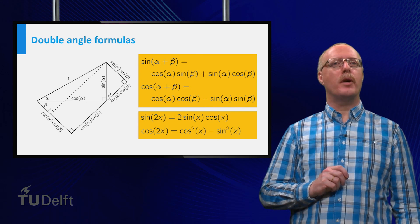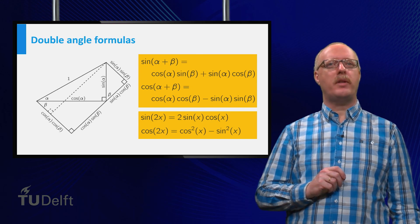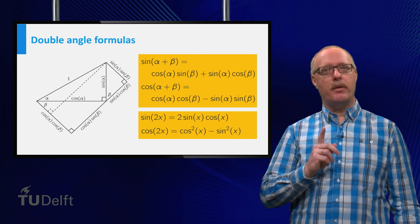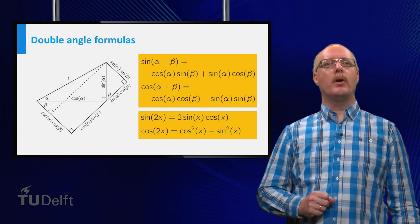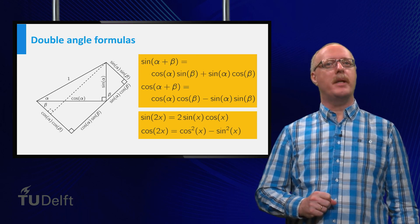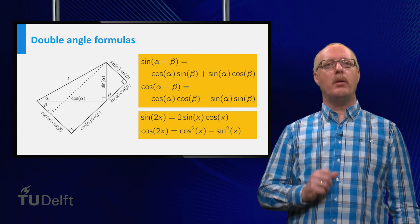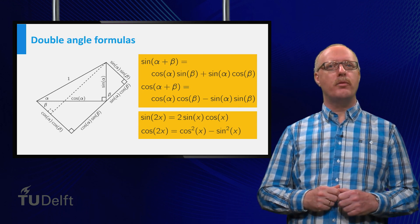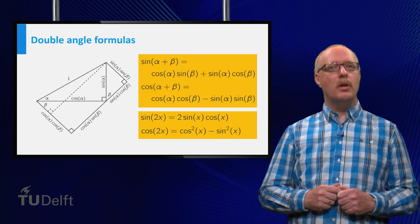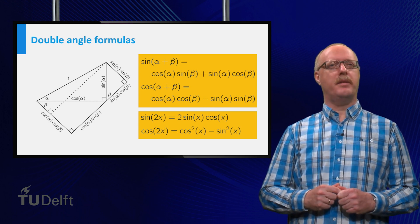This proof only holds for acute angles alpha plus beta. However, both formulas hold for all values of alpha and beta. All formulas derived in this video can be useful in solving equations involving trigonometric functions. Good luck with the exercises.